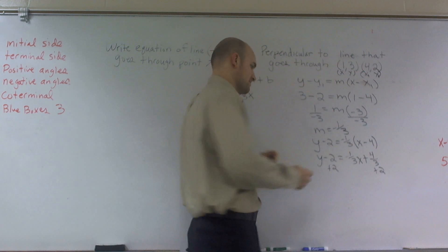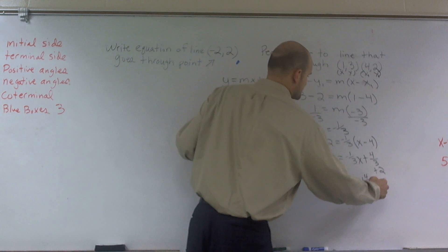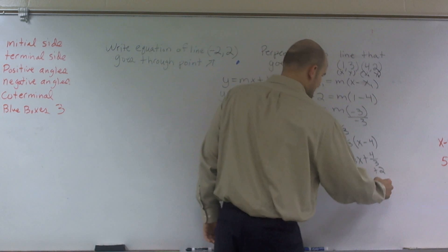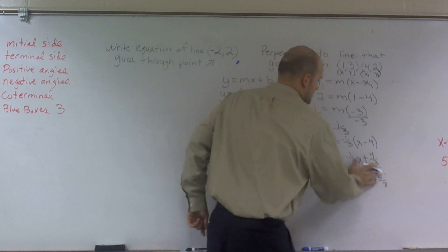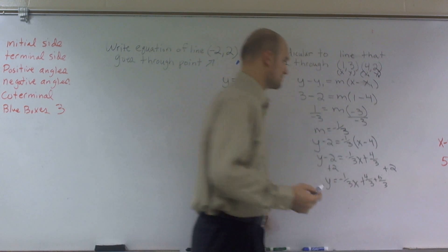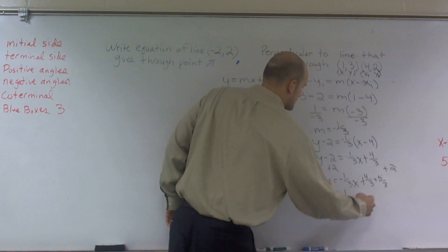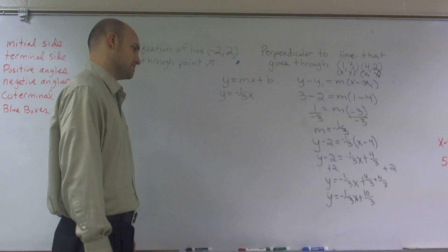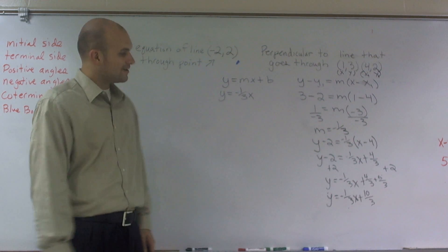Now I can't add a 2 to this fraction unless I have it as the same denominator. So I'll write y equals negative 1 third x plus 4 thirds. And then to represent 2 with a denominator of 3, I'll multiply. 2 is the same thing as plus 6 over 3. Because 6 divided by 3 is equal to 2. So therefore, that's going to give me 10 thirds. So y equals negative 1 third x plus 10 thirds.